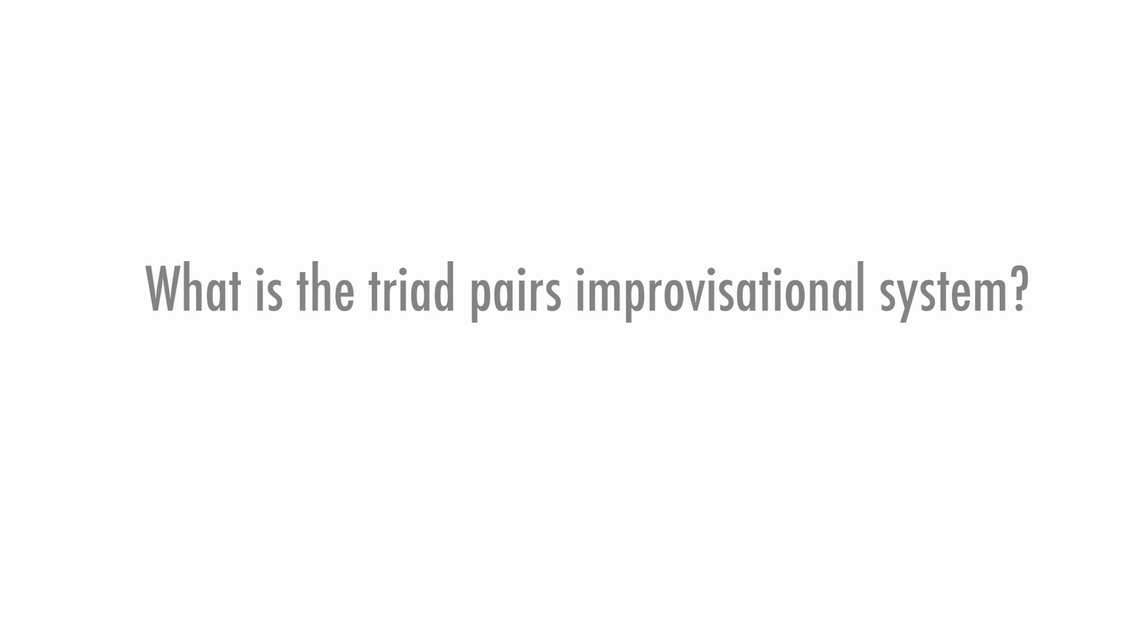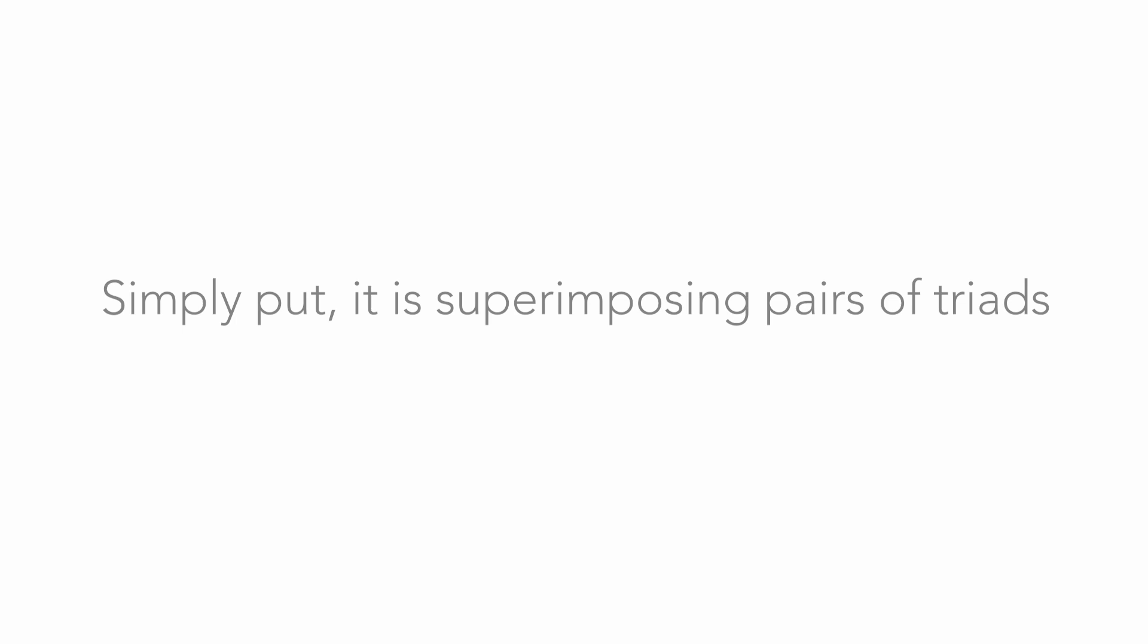What is the Triad Pairs Improvisational System? Simply put, it is superimposing pairs of triads - major, minor, diminished, etc. - over a chord or harmony.